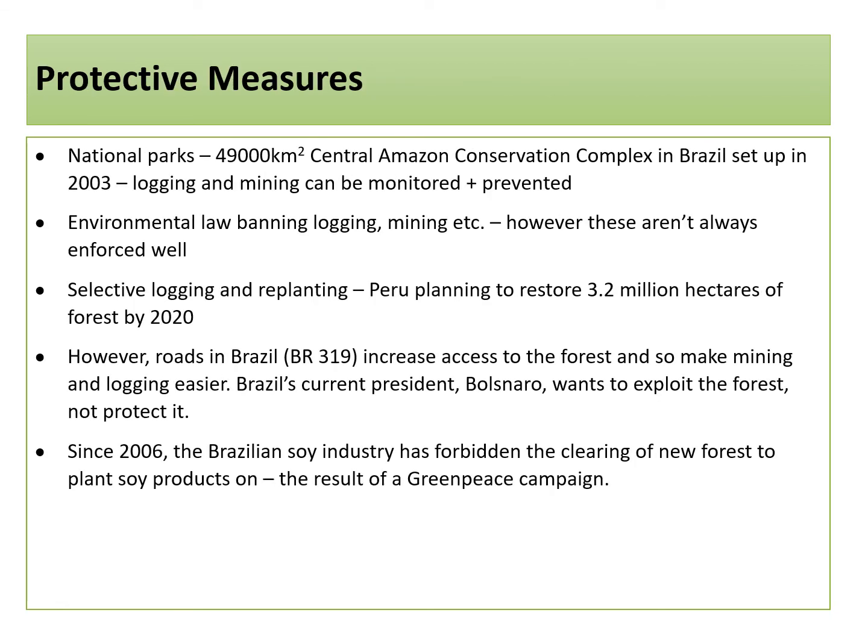Protective measures for the Amazon. National parks have increased in many places, such as the 49,000 km² Central Amazon Conservation Complex in Brazil, set up in 2003, meaning that logging and mining can be more easily monitored and prevented. Many countries have environmental laws which ban logging, mining and exploitation of the forest, but these aren't always enforced well and deforestation continues to take place. Some countries choose to take part in selective logging and replanting, such as Peru, which is planning to restore 3.2 million hectares of forest by 2020.